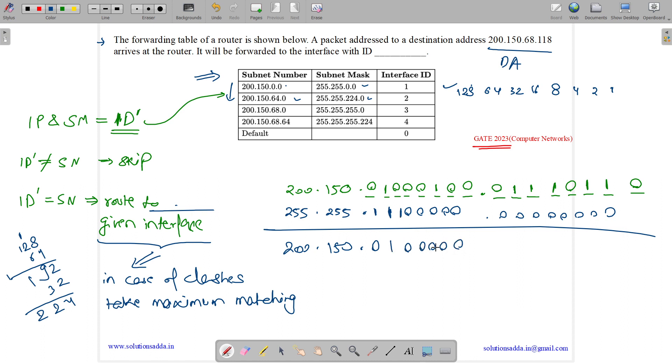Rest all will be zeros. When we do the dot product, this will become the same number: 200.150. 1 into 0 is 0, 1.1 is 1, 1.0 is 0. So here it will be all zeros. What is this? It's 200.150.64.0. Let us check whether it matches. Yes, this one also matches.